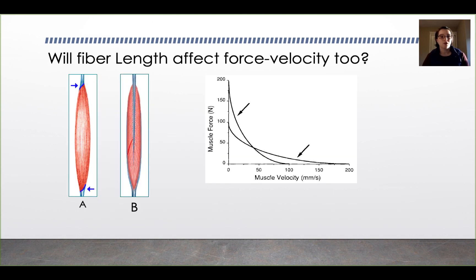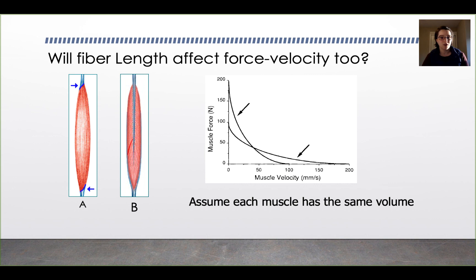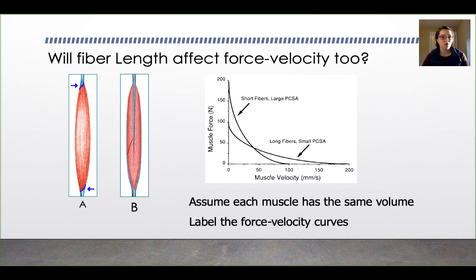Fiber length and orientation affect velocity. A muscle with very long fibers has a different force-velocity curve than a pennate muscle with short fibers that can generate more force but more slowly. Assuming the two muscles have the same volume, the muscle with long fibers and small PCSA has a very different curve shape than the muscle with short fibers and large PCSA. A single sarcomere can only contract a certain amount in a given time, but with two sarcomeres in series, you can shorten twice that amount in the same time.